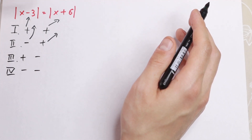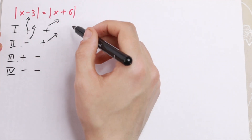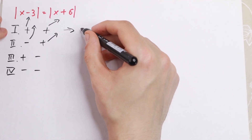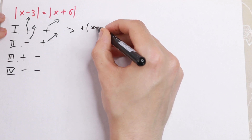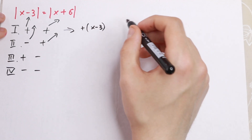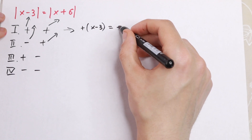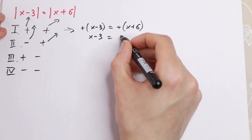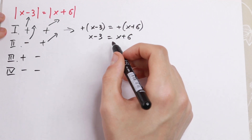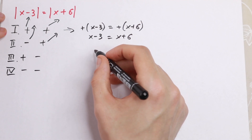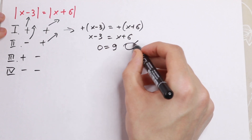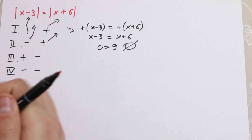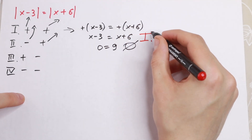Let's solve the first case where both are positive. We will have plus x minus 3 plus x plus 6 — the plus doesn't change anything — so we have x minus 3 equal to x plus 6. If we solve this, we get a really interesting answer: 0 equal to 9, which is incorrect. So the first case is not good for us — we reject this answer.